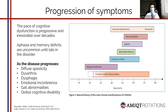Following the progression of symptoms in CADASIL, the pace of cognitive dysfunction is progressive and can extend over to the end of the disease. Of the previously mentioned cognitive domains, aphasia and memory deficits are uncommon until late in the disorder. As the disease progresses, patients exhibit diffuse spasticity, dysarthria, dysphagia, emotional incontinence, gait abnormalities, and global cognitive disability.